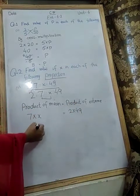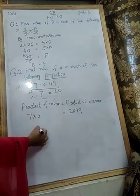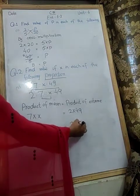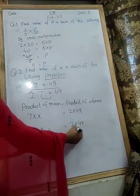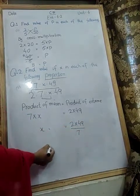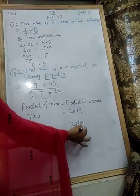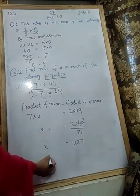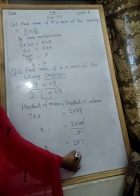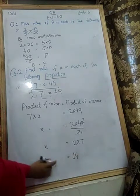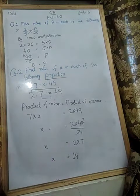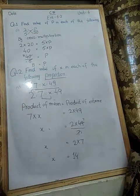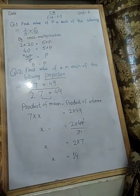So 7X here. We have to find X, so we will divide. What will happen? 2 multiplied by 49 divided by 7. See, there's cutting: 7 into 49 goes 7 times. So X equals 2 times 7, which is 14. So X equals 14. Understand the formula: product of mean is equal to product of extremes.